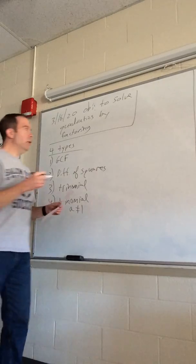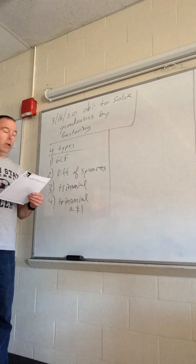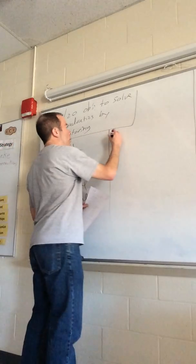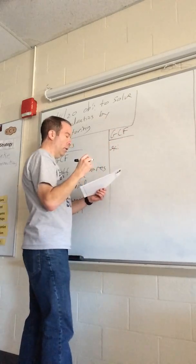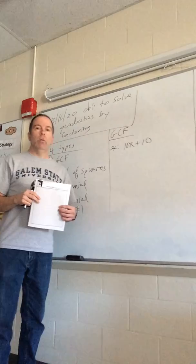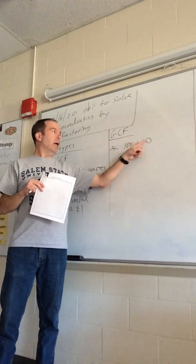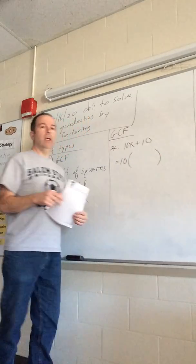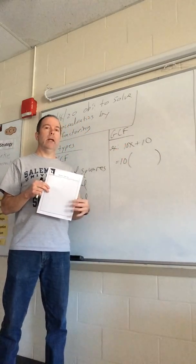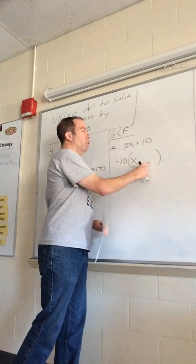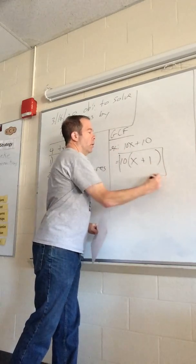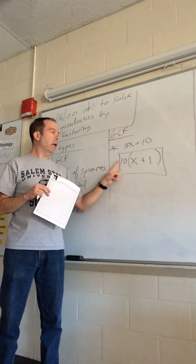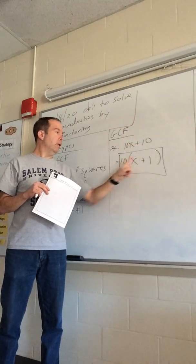Let's do some problems using the GCF. Remember, when we're doing GCF we're looking for the greatest common factor — the number or variable that goes into all terms. Our first example is 10x + 10. The number they have in common is obviously 10, so we factor out a 10. Ten times what makes 10x? That's x. Ten times what makes 10? That's plus 1. So our two factors are 10 and (x + 1).